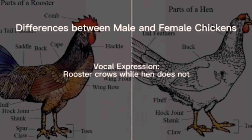Vocal expressions: everyone knows that a rooster crows while a hen doesn't. What is not generally known is that a rooster crows intermittently all day long, not just in the morning.